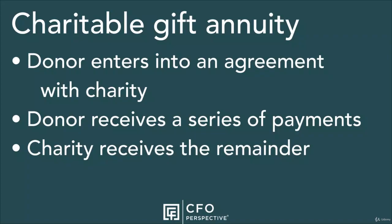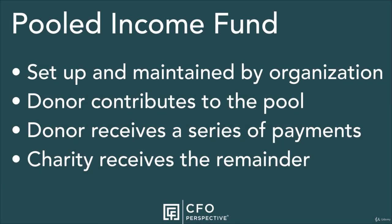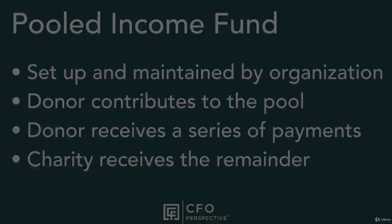There are a couple of similar structures used with a wider variety of donors. Charitable Gift Annuity: the donor makes a donation and enters into an agreement with a charity to receive a series of payments over the life of the donor or their spouse. The charity receives the remainder of the funds when the payments end. Pooled Income Fund: these are set up and maintained by the charitable organization rather than the donor. Donors contribute to the pool and receive periodic payments from it. The difference between what's donated and what's paid out to the donor goes to charity.